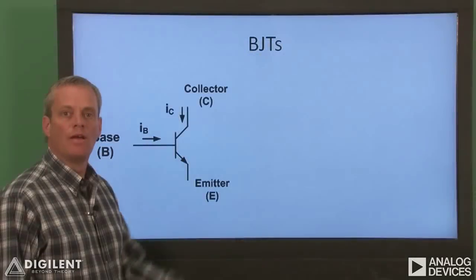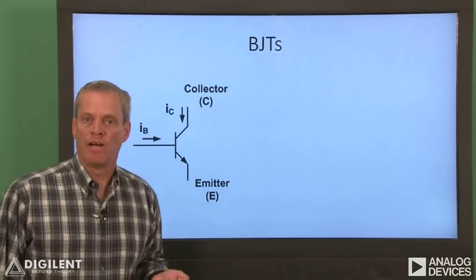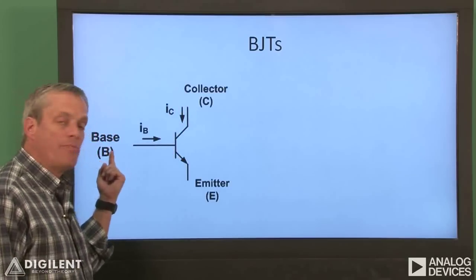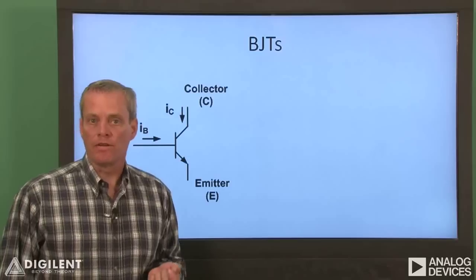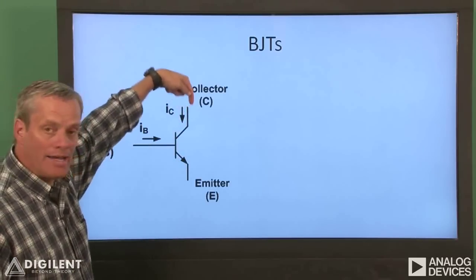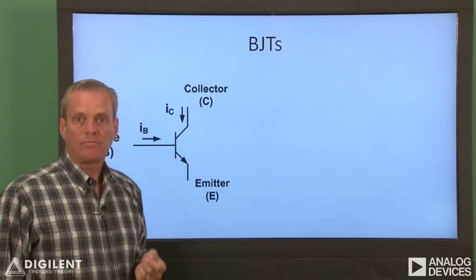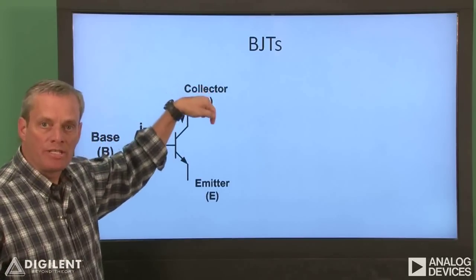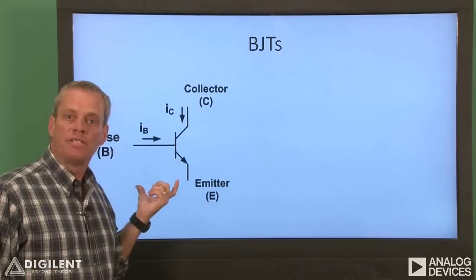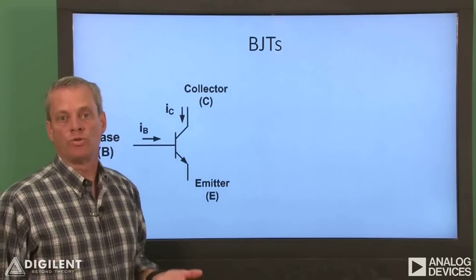Now let's look at a similar circuit which uses a bipolar junction transistor, or BJT, to create a dependent source. This is a circuit schematic symbol of a BJT. BJTs, like MOSFETs, are three terminal devices. The terminals are called the collector, the base, and the emitter. Roughly speaking, the current flowing into the base, I sub B, controls the amount of current, I sub C, through the collector. This current goes through the collector and out the emitter. Increasing the base current tends to increase the collector current, and decreasing the base current reduces the collector current. Thus, the BJT is typically modeled as a current-controlled current source.